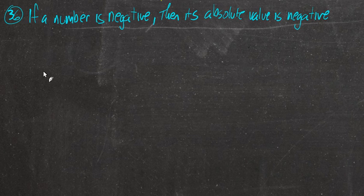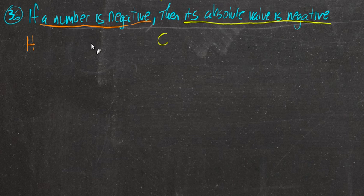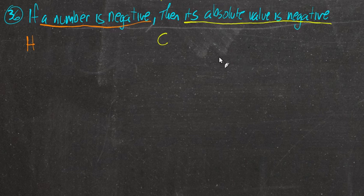Next we deal with if-then statements — number 36. Identify the hypothesis and conclusion of the conditional statement, then decide whether it's true. The statement is: 'If a number is negative, then its absolute value is negative.' The hypothesis is 'a number is negative,' and the conclusion is 'its absolute value is negative.' So we're assuming there's a negative number and concluding its absolute value is also negative. Is this true or false?